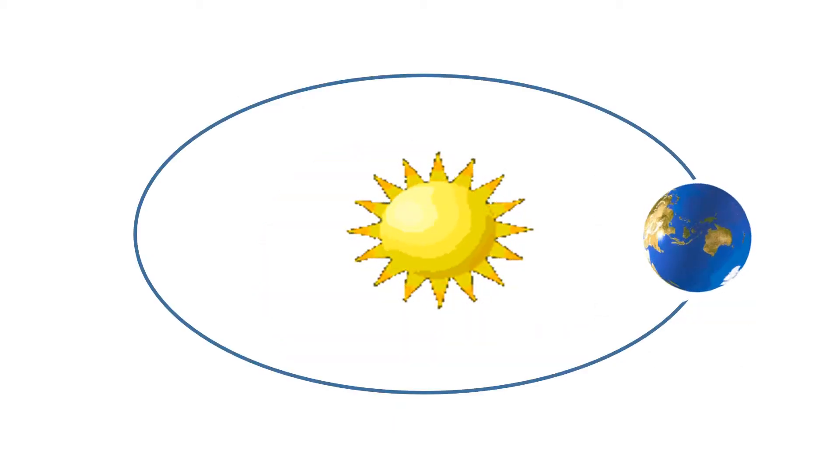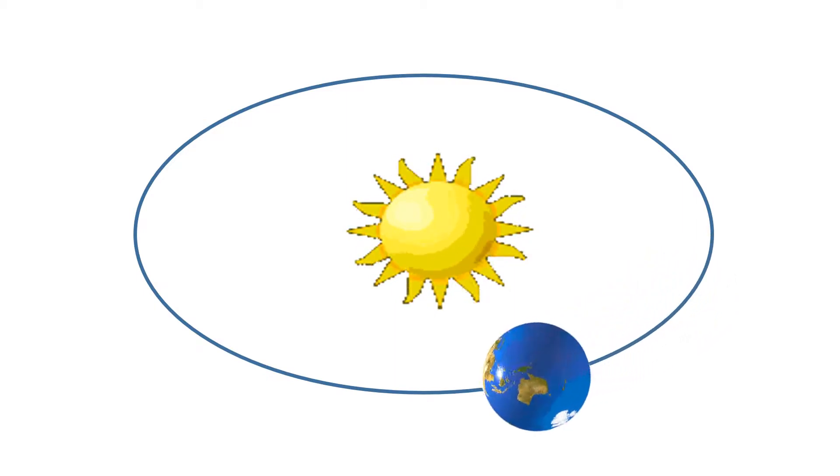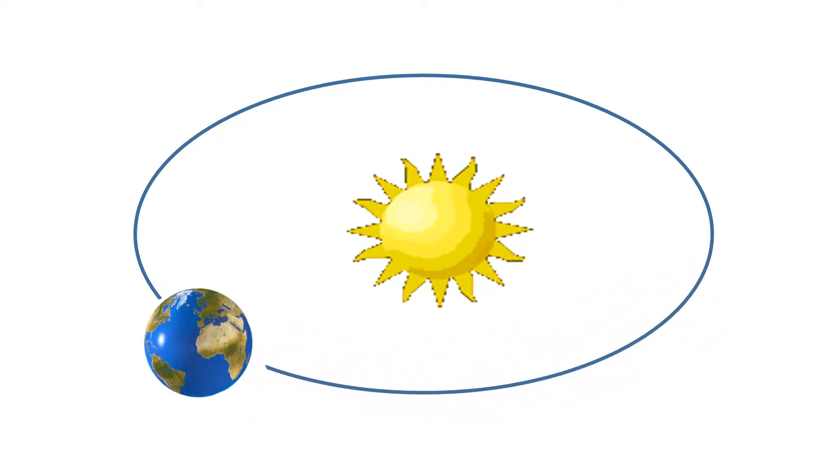The Earth also revolves around the Sun. The path in which the Earth revolves around the Sun is called orbit.